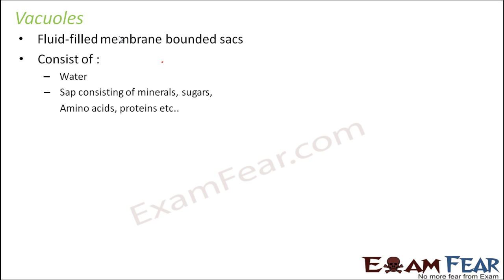That is why vacuoles occupy a large volume of the plant cell. If you look at the plant cell, you will see that the blue-colored vacuole shown in the picture occupies almost more than 50 percent of the plant cell. In some cases it occupies up to 90 percent, meaning all other organelles fit in the remaining 10 percent. Vacuoles also consist of toxic or waste materials kept separated inside them.